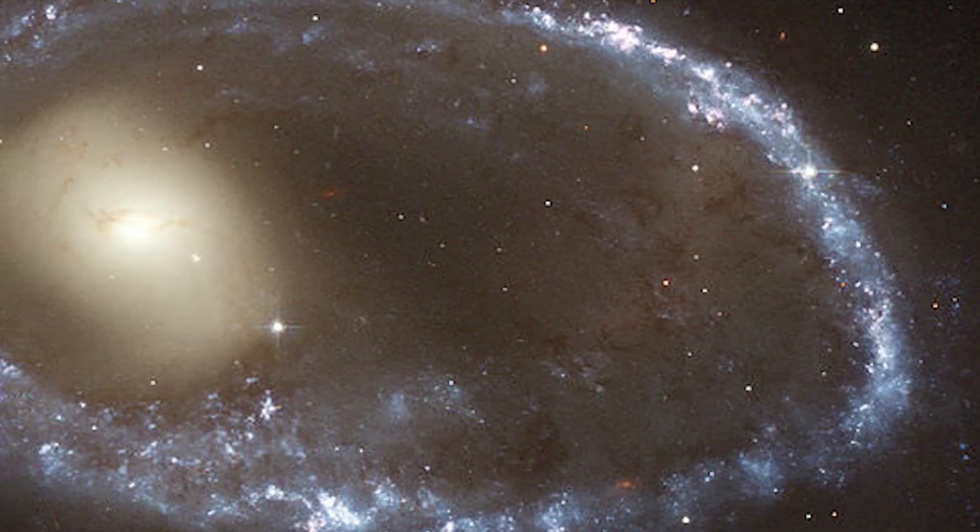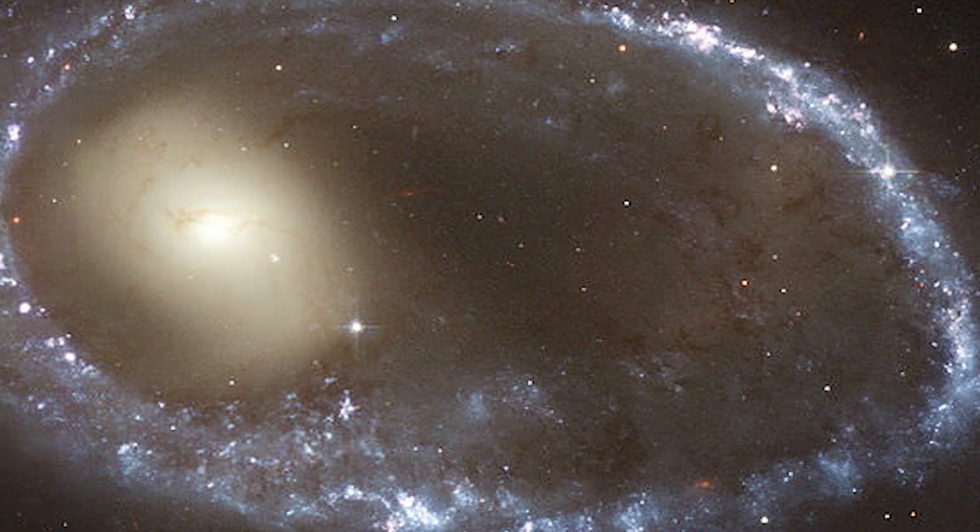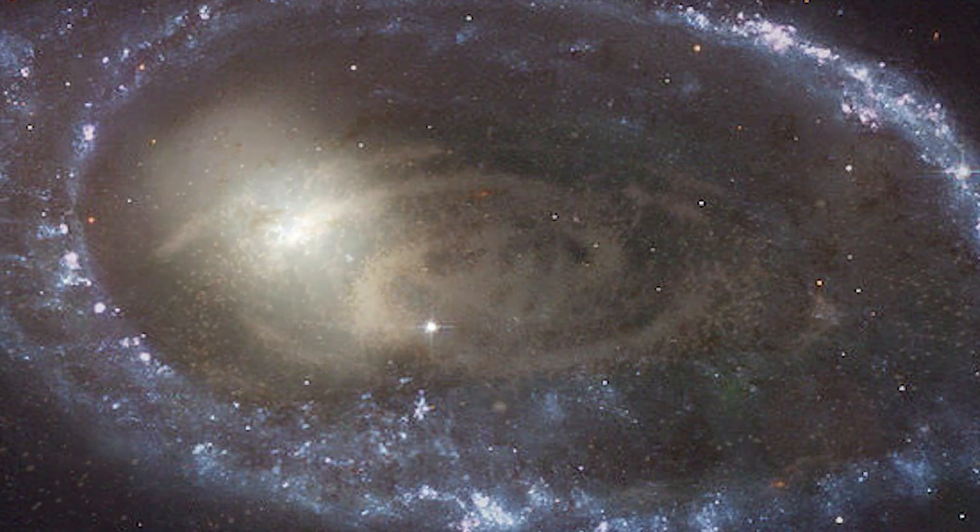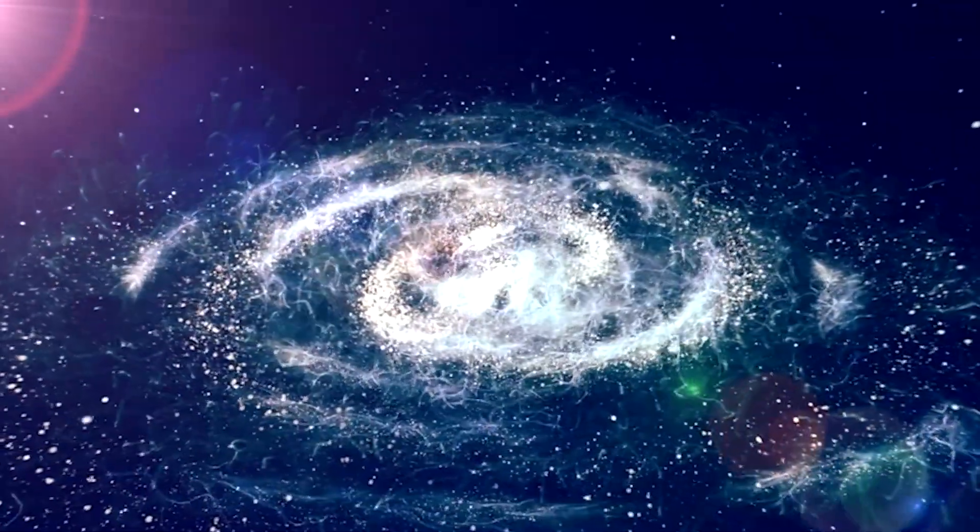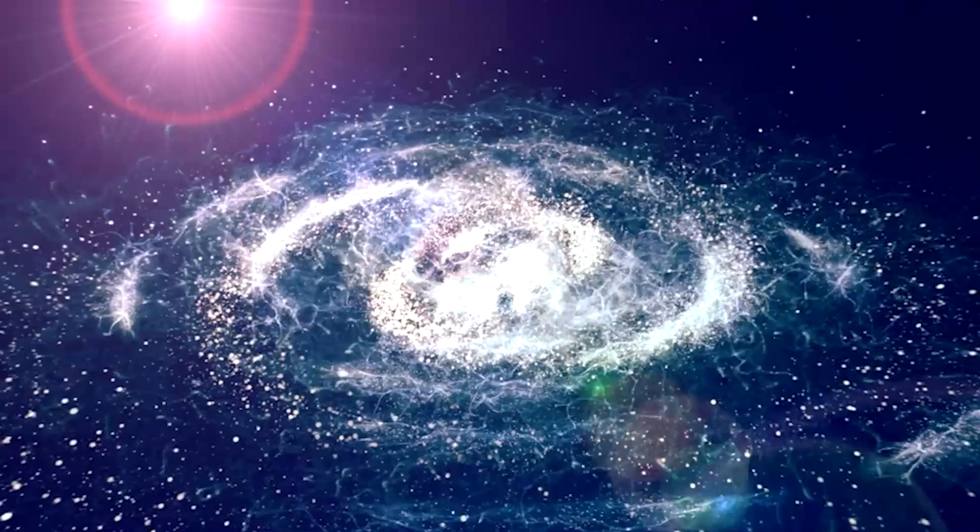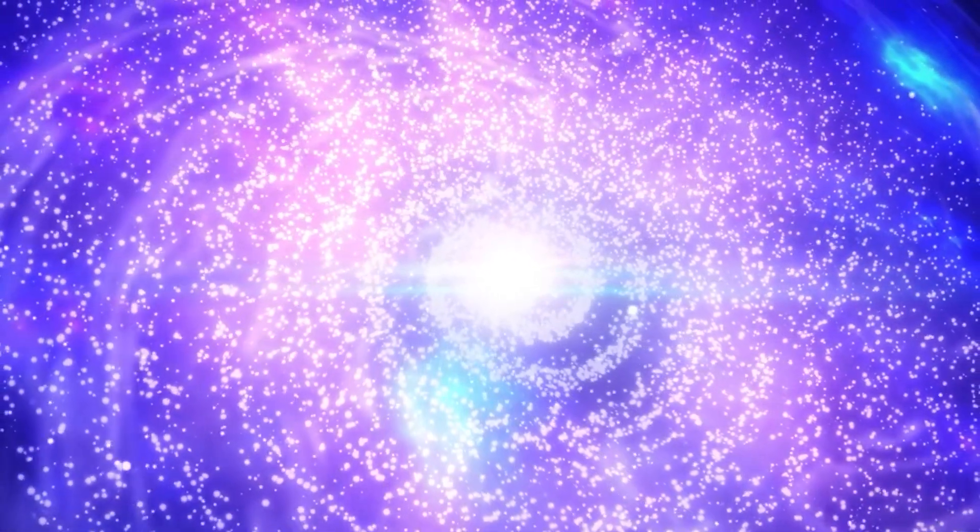Furthermore, the Big Ring's shape defies categorization. It's not a simple ring, but rather a corkscrew-like structure with galaxies lining its elongated spiral. This intricate geometry adds another layer of complexity to the puzzle, hinting at a formation mechanism unlike any known process in the cosmos.